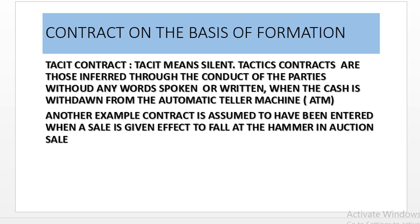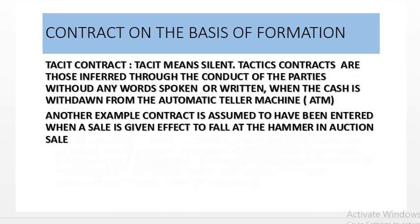Tacit contracts means silent. Tacit contracts are those inferred through the conduct of the parties without any words spoken or written. For example, when cash is withdrawn from an ATM. Another example: a contract is assumed to have been entered when a sale is given effect by the fall of the hammer at an auction sale. These are examples of tacit contracts.